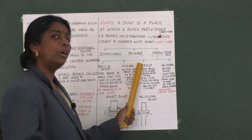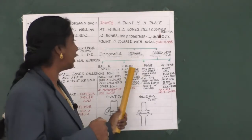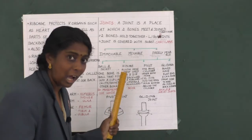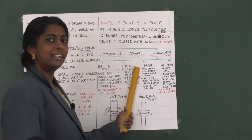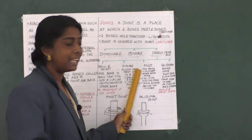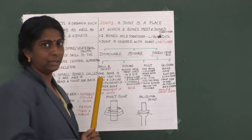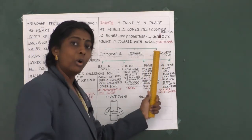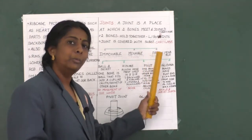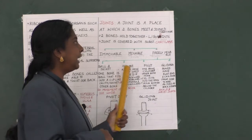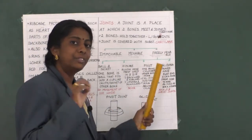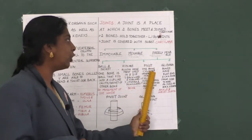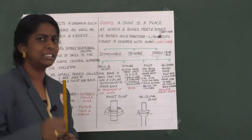The third type is the freely movable joint, which allows movement in all directions. This freely movable joint is further classified into four types: ball and socket joint, hinge joint, pivot joint, and gliding joint.